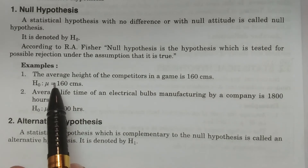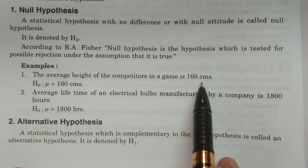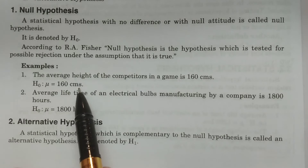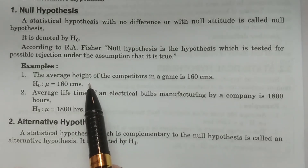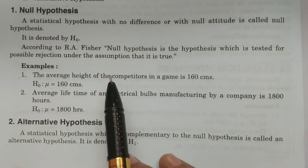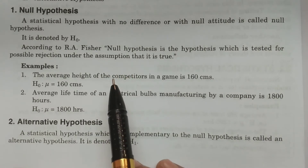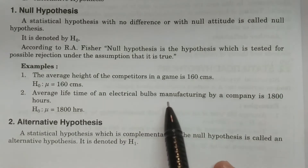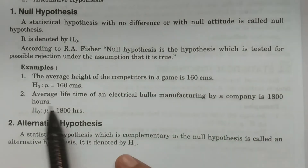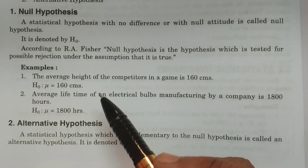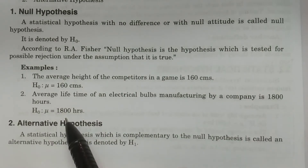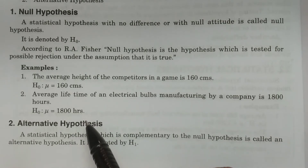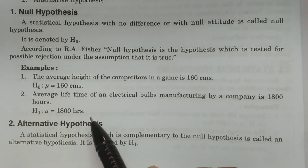For example, the average height of competitors in a game is 160 centimeters — that is H₀: μ equal to 160 centimeters. We should not consider greater than, less than, or not equal to. The average lifetime of electrical bulbs manufactured by a company is 1800 hours — so H₀: μ equal to 1800 hours. This is the possible consideration of hypothesis with no difference.